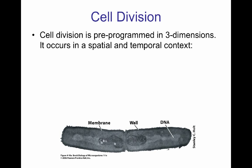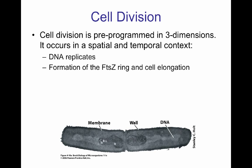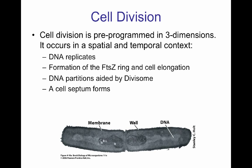The DNA has to replicate so each daughter cell gets the same amount of genetic material. We're going to look at the formation of the FTSZ ring, also called the Z ring, and how that formation helps separate the two daughter cells. The cell also has to elongate and grow. DNA partition is aided by a complex of proteins in the divisome, and at the end the formation of a cell septum helps divide the two cells into independent cells.